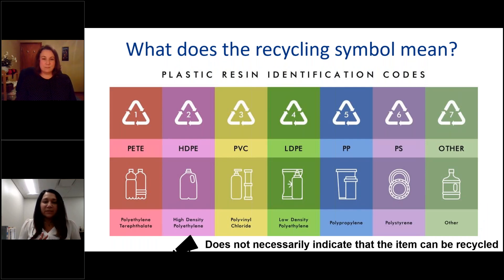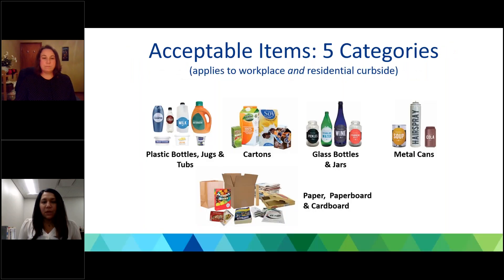I want to take a moment to discuss the triangle with the numbers. Sometimes that can get confusing because folks think that if it has the triangle, it means it's recyclable. What that actually means is the triangle with the number indicates the type of plastic — it's the resin identification code. Numbers one through seven are just the type of plastic; it doesn't necessarily mean that item is recyclable. For the paper and paperboard/cardboard category, a good rule of thumb is if you can rip or tear it, it's likely recyclable. We get questions about lean cuisine or frozen meal boxes — the test is if you can rip it, it's recyclable. We don't want photographs or laminated paper — anything you wouldn't be able to easily tear.